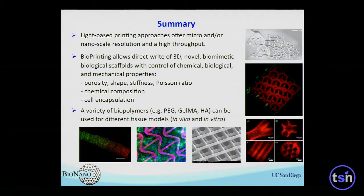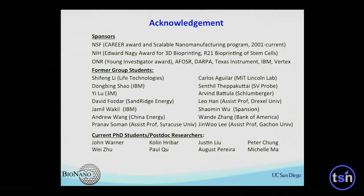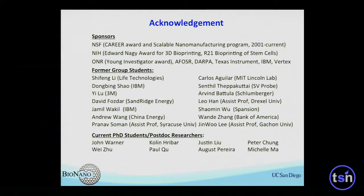My time's up. To summarize: we're using light processing for polymerization to achieve much better printing resolution. We can generate scaffolds with or without cells with control in terms of porosity, shapes, stiffness, Poisson's ratio, and chemical composition, as well as cell encapsulation. We've been working with different biopolymers — polyethylene glycol, gelatin methacrylate, hyaluronic acid, and their combinations — to tune mechanical properties for different tissue models, with applications either in vivo for tissue repair or in vitro for tissue modeling, disease modeling, and drug screening. Thank you very much.